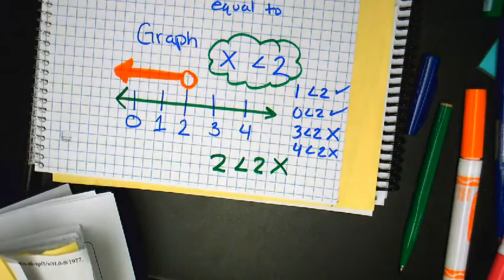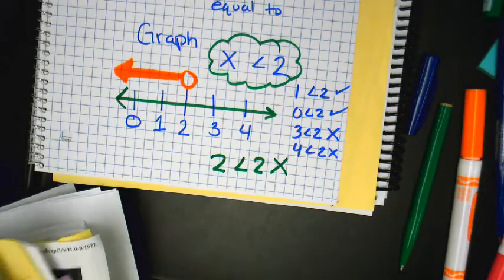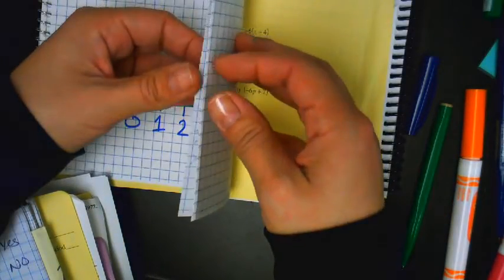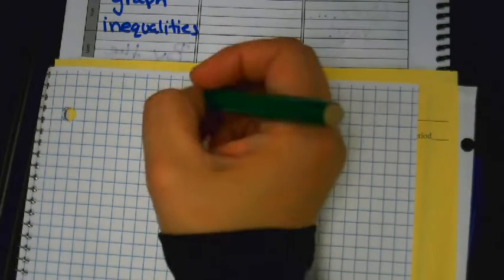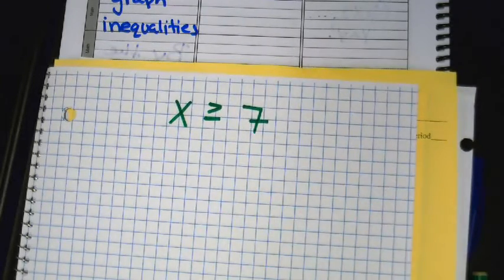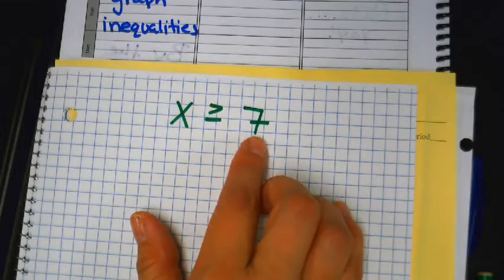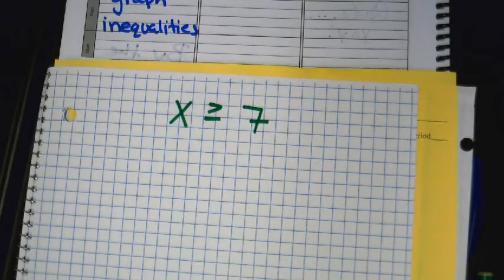There's a lot going on here, but in 20 minutes it's not going to be difficult at all. Do I expect you to have it mastered on the first problem? No. What does this problem say? What does this inequality say altogether? X is greater than or equal to 7.